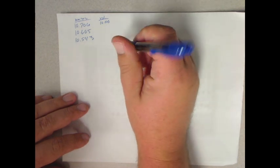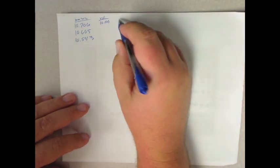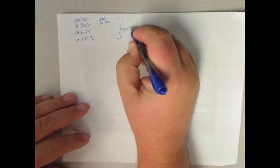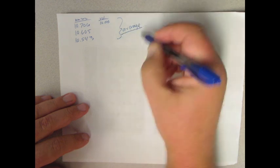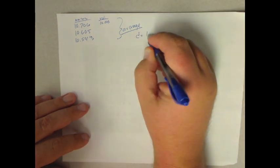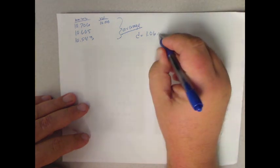We just divide the two. If we took the average of these, and I'm not going to show you how to do that calculation because I figure you guys know how to do this, the average density then is 1.06 grams per milliliter.